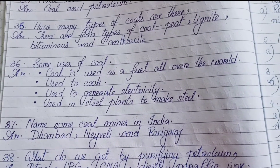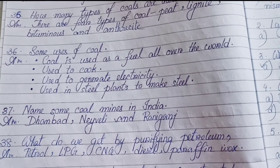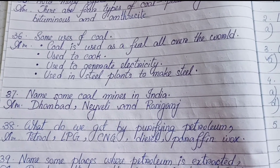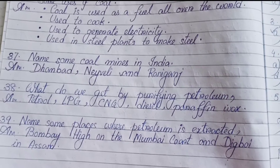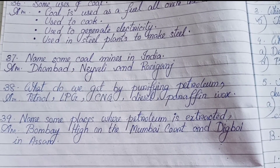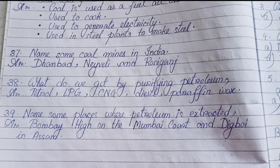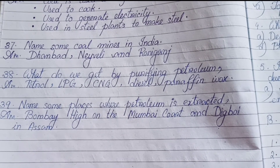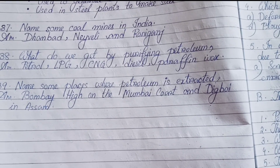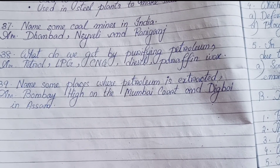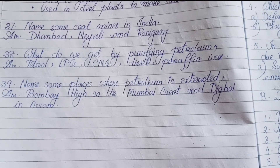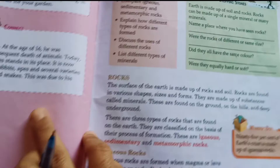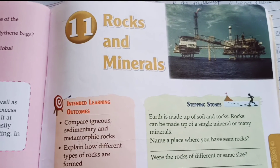Uses of coal: Coal is used as a fuel all over the world. It is used to cook, to generate electricity, and in steel plants to make steel. Name some coal mines in India — Dhanbad, Neyveli, and Raniganj. What do we get by purifying petroleum? — Petrol, LPG, CNG, Diesel, Paraffin wax. Name some places where petroleum is extracted — Bombay High on the Mumbai coast and Digboi in Assam.